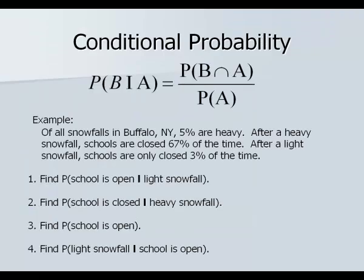Here's the formula for conditional probability. The probability of B given A is the probability of B and A over the probability of just A. In other words, the probability of both divided by the probability of the given.